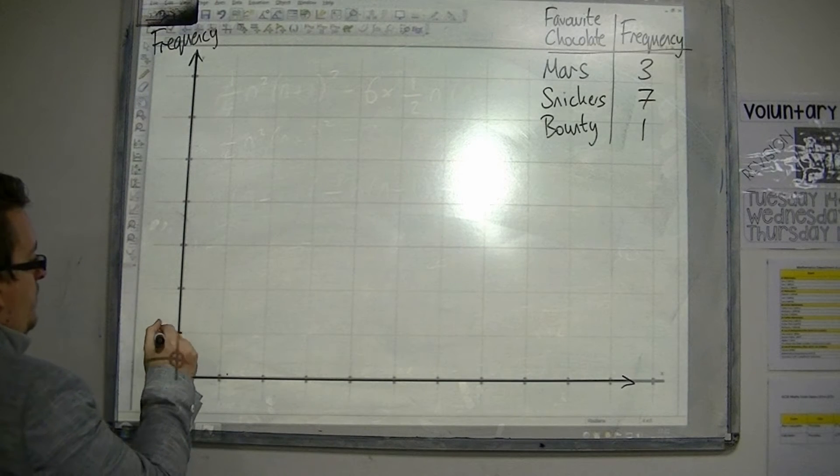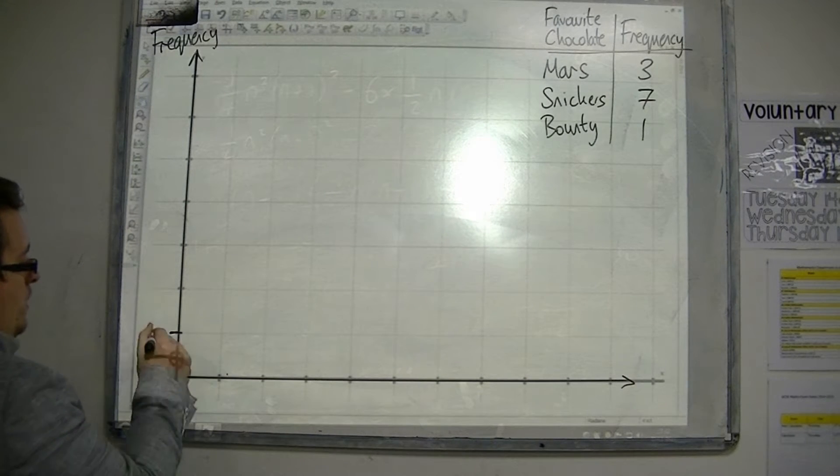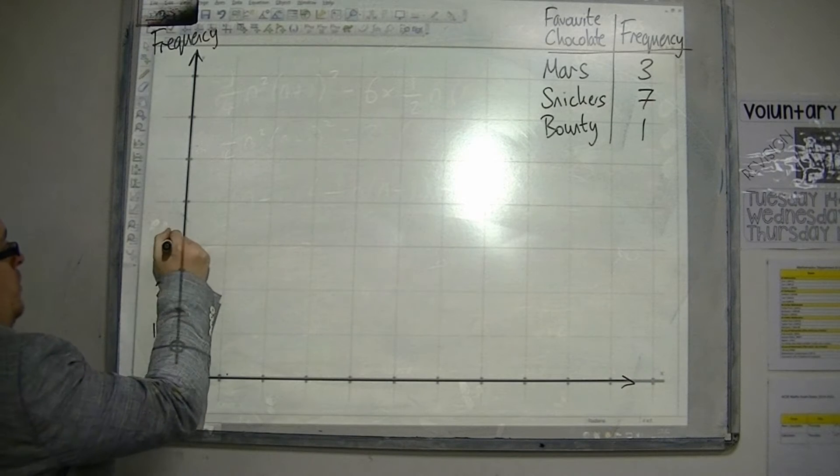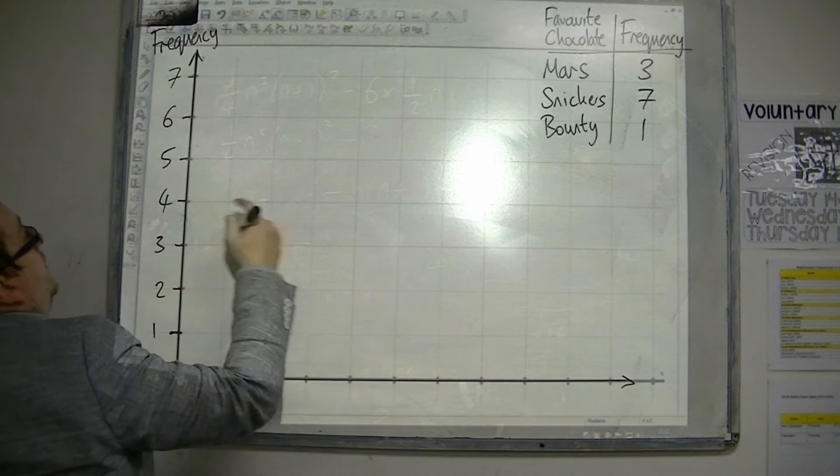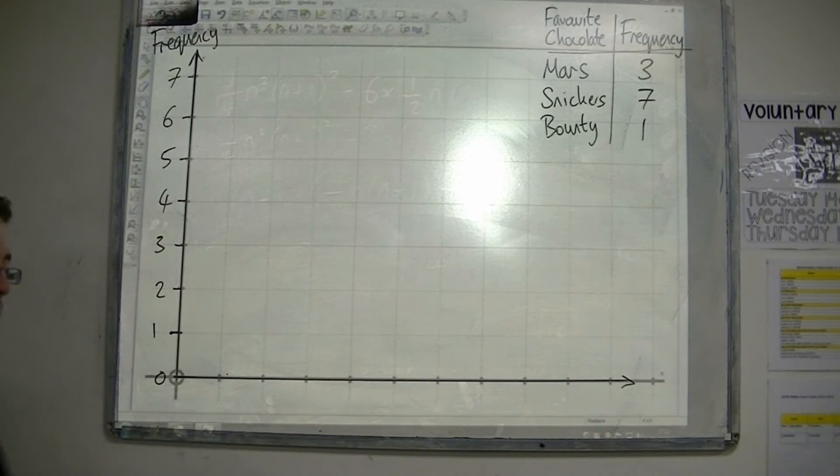And I am going to be going from zero, one, two, three, four, five, six, seven. Seven is my highest, so I'm just going to go up to seven.